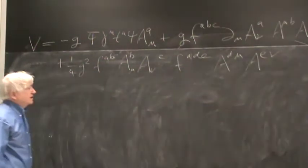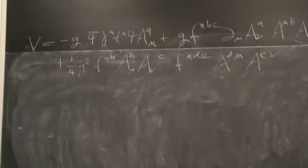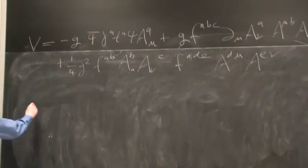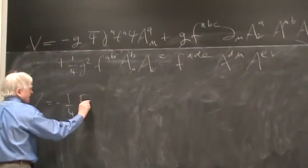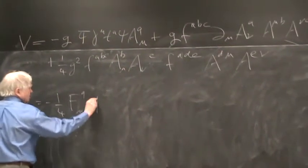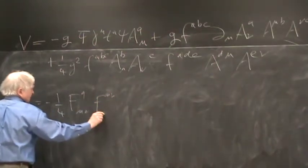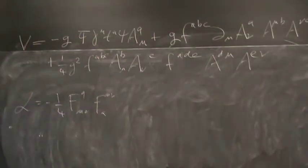So that's the interaction Hamiltonian. This came from squaring the, that's right, the Lagrangian density is minus a quarter f a mu nu f mu nu a, and you square that, you multiply that out, you keep the quadratic part as L0 or H0, and this is what's the rest.